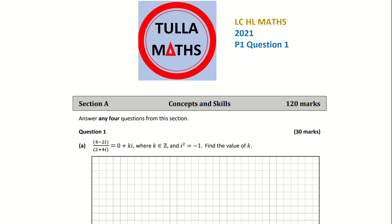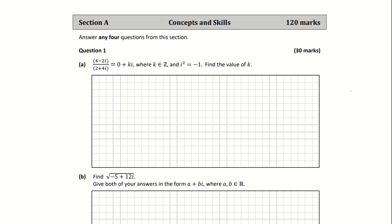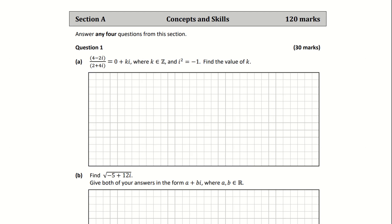In this video we're looking at question 1 on paper 1 of the 2021 Leaving Cert Higher Level paper. This is the complex numbers question. The first part has it set up as a fraction equal to 0 plus ki.